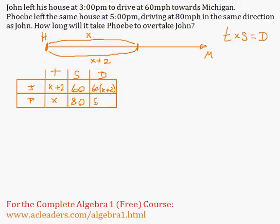And we know that the distance for both of them, from home to that point, is the same. So 60 times x plus 2 is equivalent to 80x.